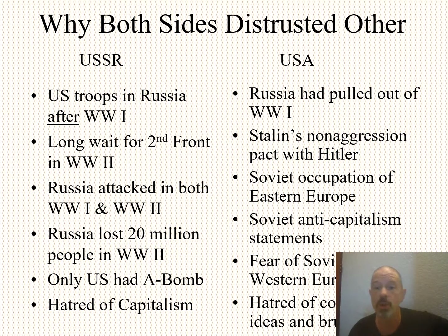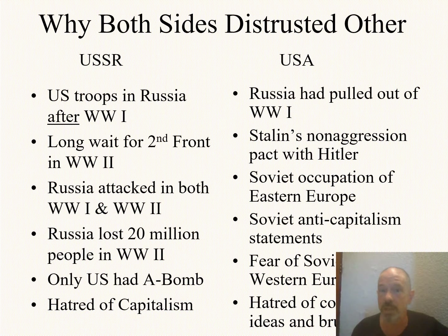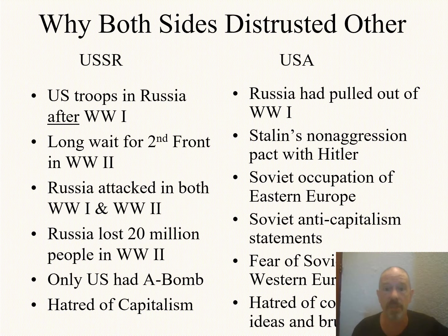After World War II, the Soviet Union had said, we are occupying Eastern Europe, but don't worry — we're going to allow free democratic elections. And they don't do that. Not at all. How do you trust somebody that goes back on their words? The Soviets were pretty clear: we are going to hang capitalism with the rope that they produce. Capitalism is doomed to failure. We will destroy it.